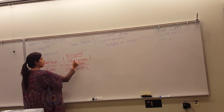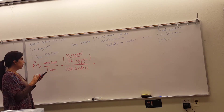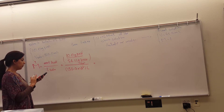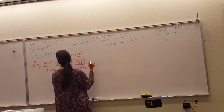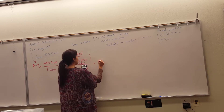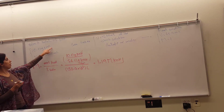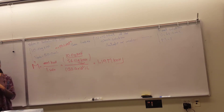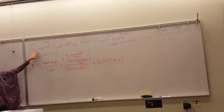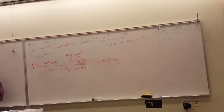Grams cancel, leaving moles per liter. So: 10 divided by 56.11, divided by 0.15 liters. Using three significant figures, that gives 1.19 molar potassium hydroxide. This is the molarity of the very first solution — made by adding 10 grams of potassium hydroxide to a volumetric flask and adding water until the volume reaches 150 milliliters.